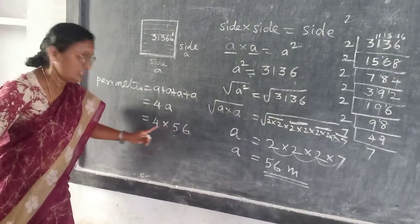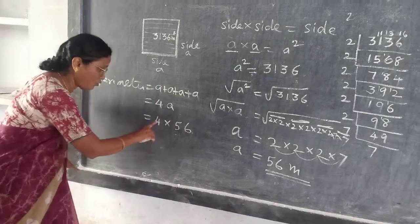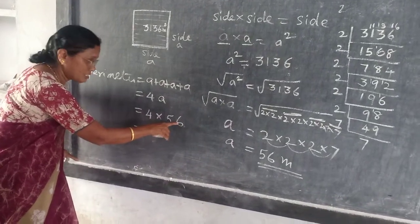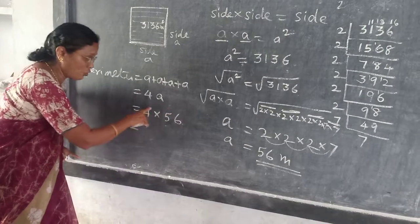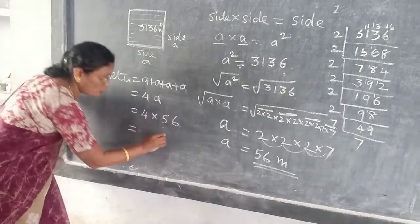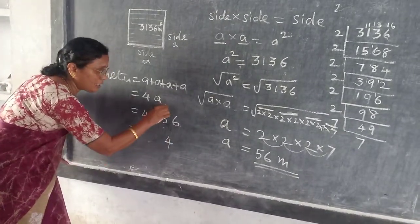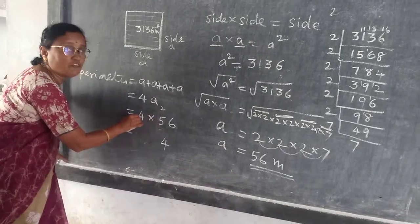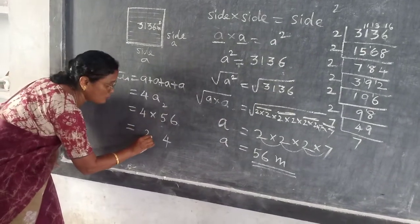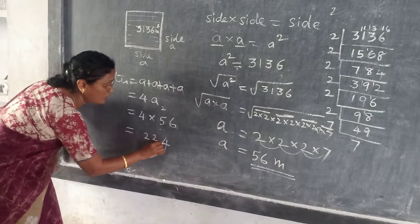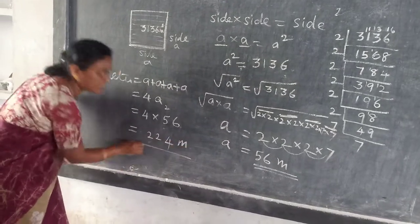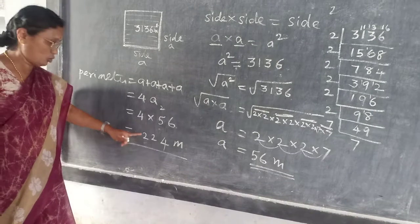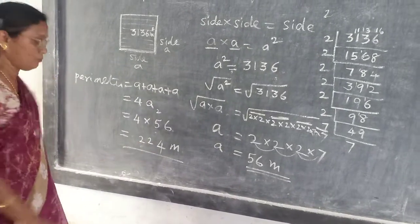Four times fifty-six. Five fours are twenty, six fours are twenty-four, remainder two. Five fours are twenty, twenty plus two is twenty-two. So perimeter is two hundred and twenty-four meters. Because this is the perimeter — two hundred and twenty-four meters.